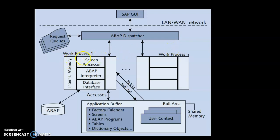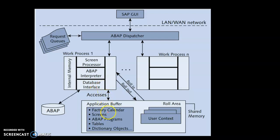There can be many work processes and all work processes have a common structure. Inside the work process we have a screen processor, which connects with the user through the ABAP dispatcher. We have an ABAP interpreter or ABAP processor — similar to the ALU in a CPU but for the SAP system. We also have a database interface, which connects the application layer with the database layer, and internal memory to process the data.